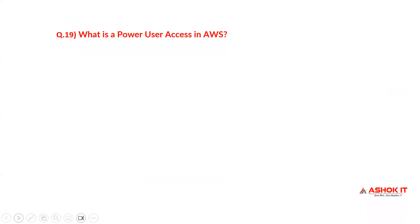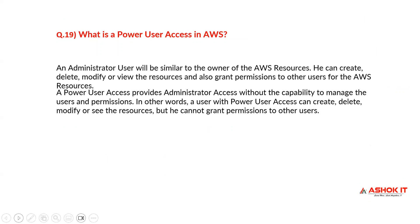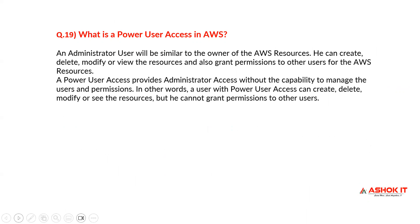What is power user access in AWS? An administrator user is similar to the owner of the AWS resource — they can create, delete, modify, or view resources and also grant permissions to other AWS users. Power user access provides administration access without the capability to manage users and permissions. In other words, a user with power user access can create, delete, modify, or view logs, but cannot grant permissions to other users.